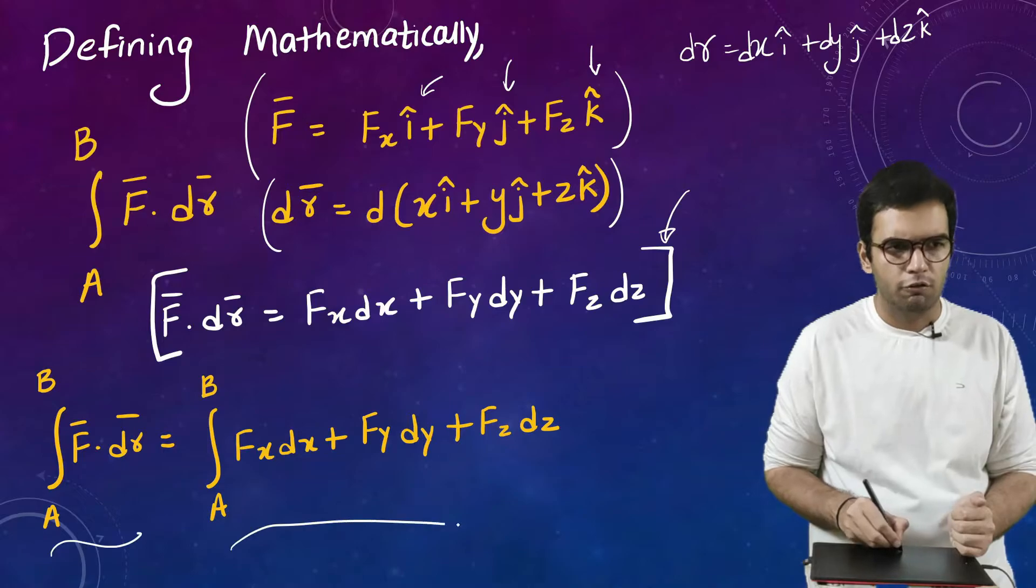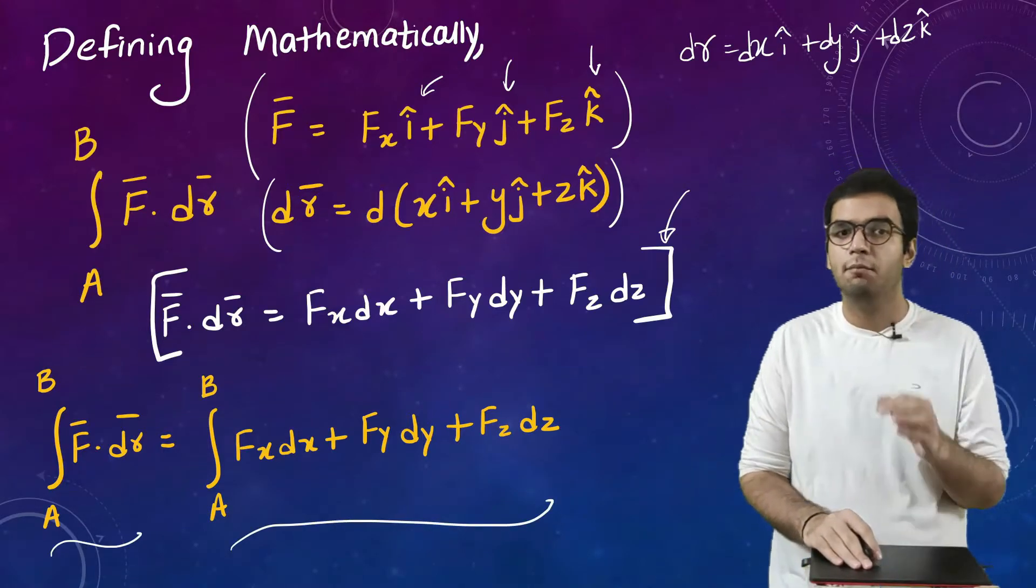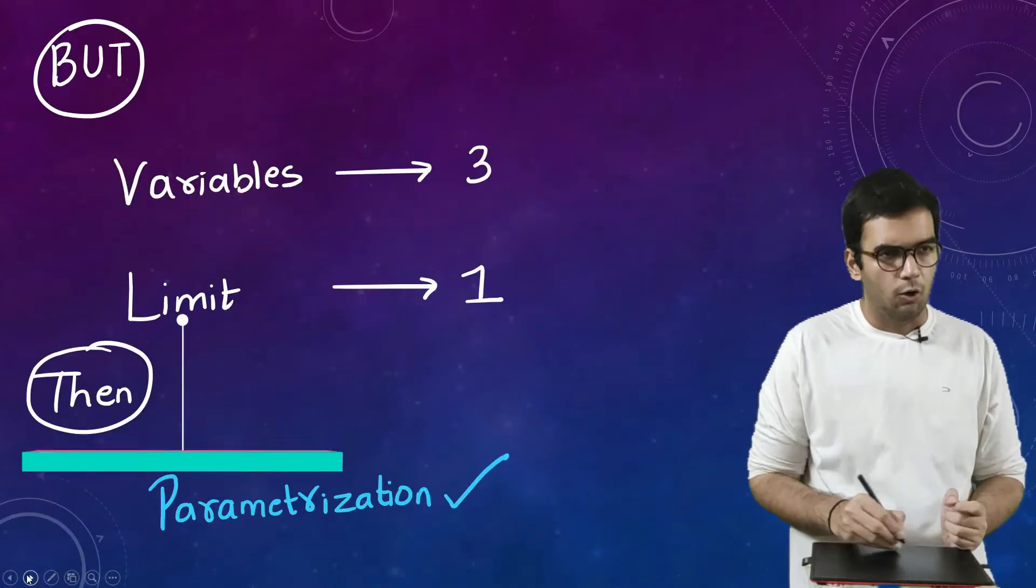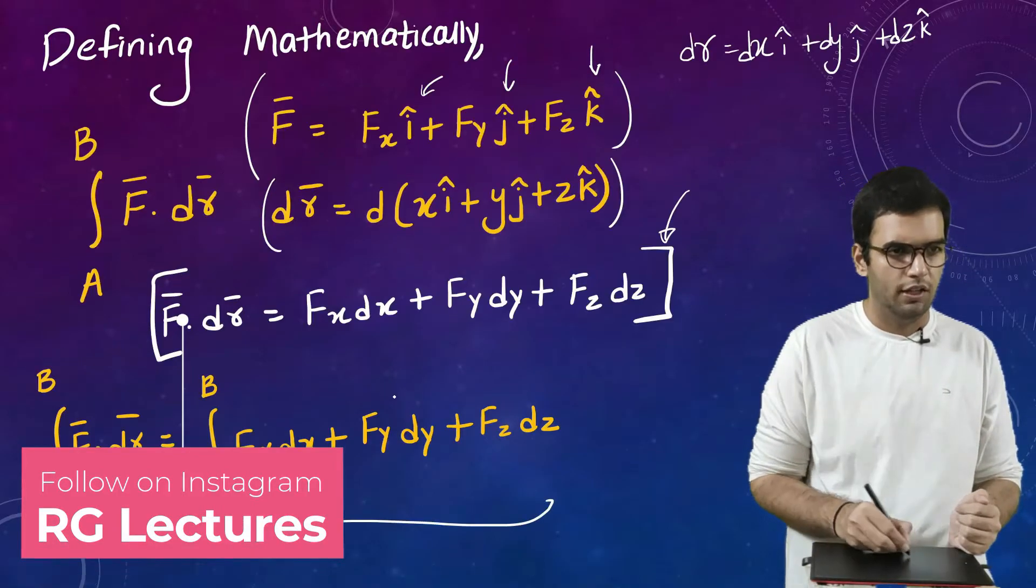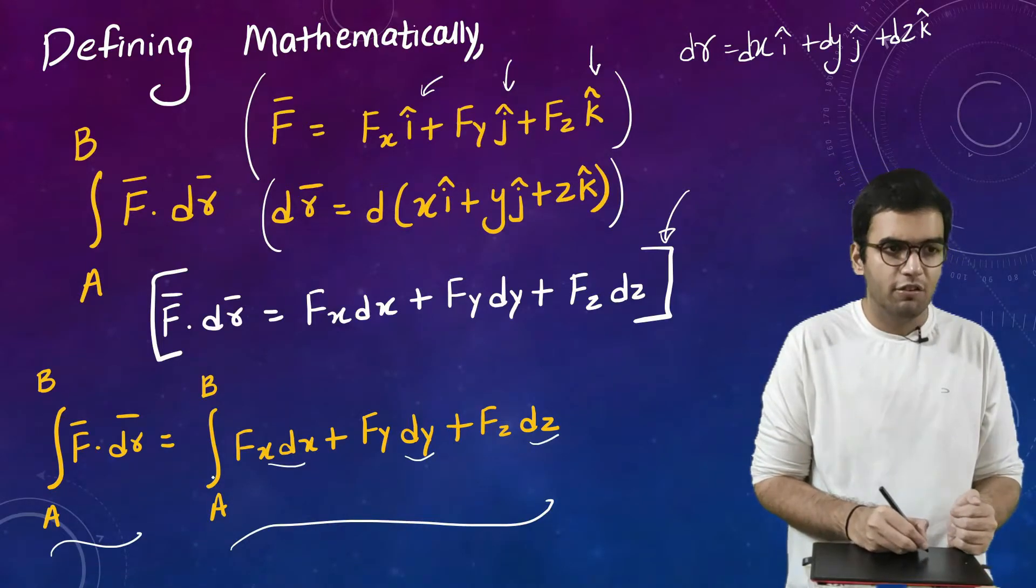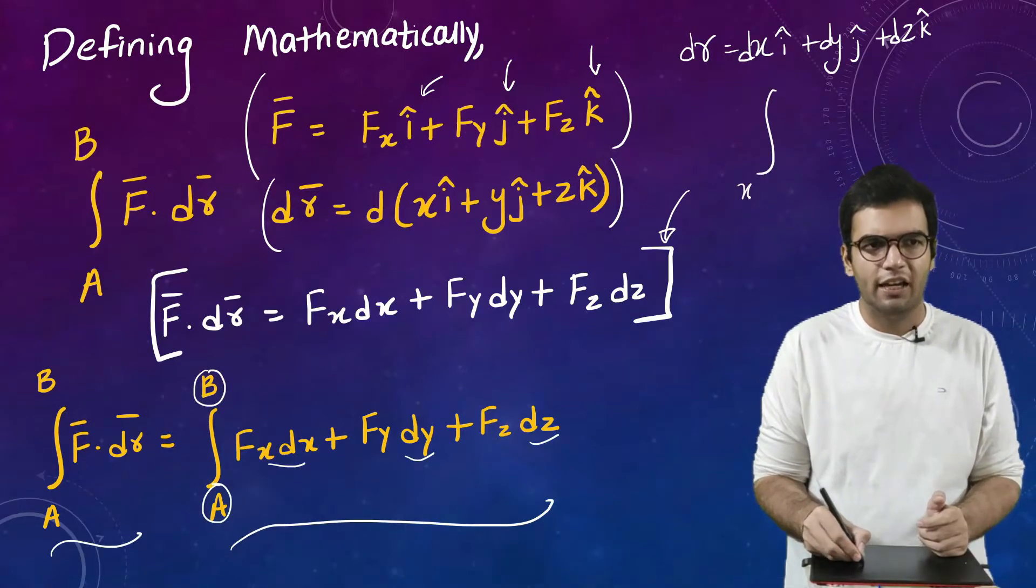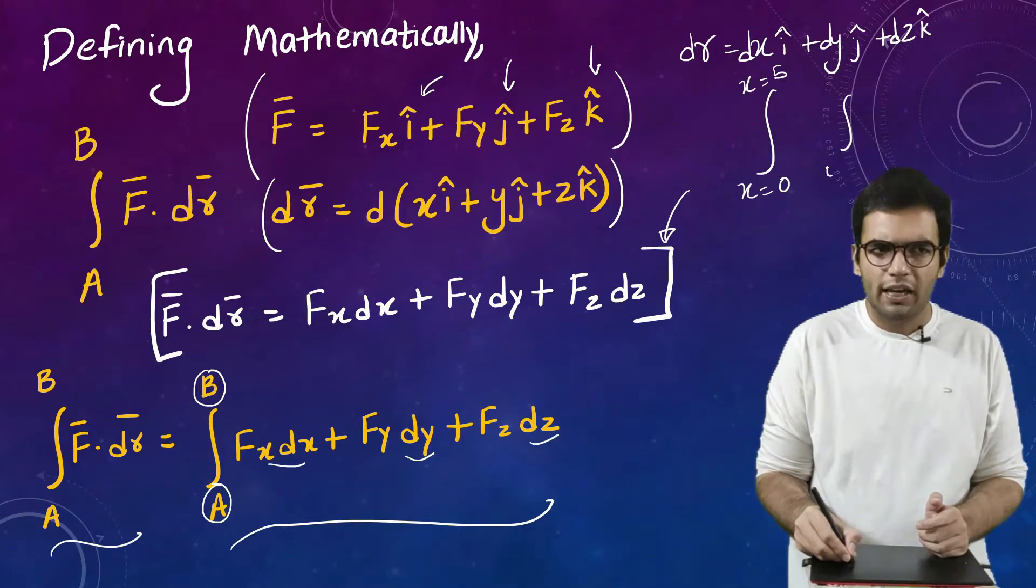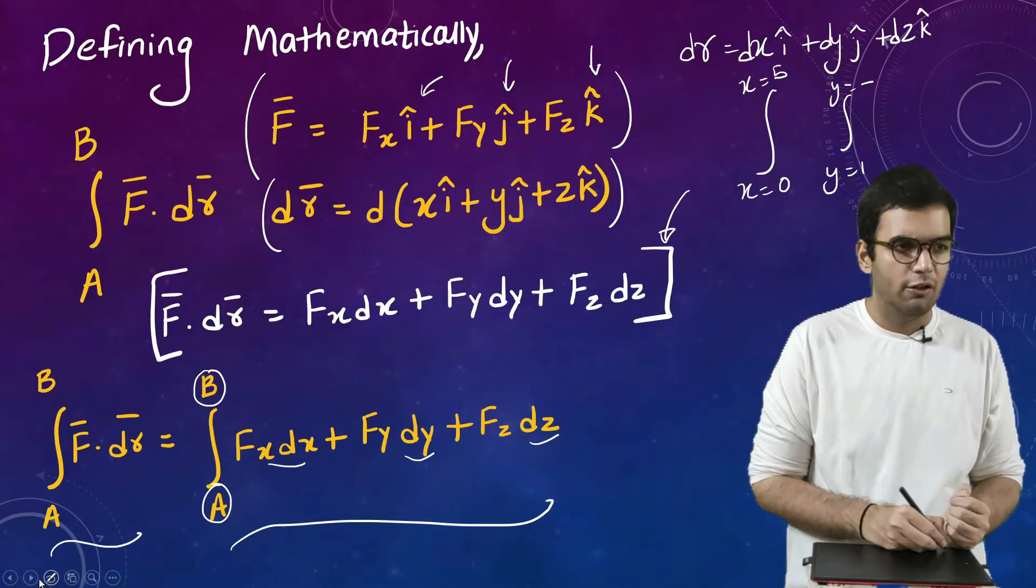So finally instead of this I can also write this as the answer. So this is the mathematical definition of the line integration. Okay, now the thing here is there are three variables in the equation: there is dx, there is dy, there is dz. But if I look at this integral I can substitute only one limit in this integral, right? I can write either x equals to 0 to x equals to 5 or I can write y equals to 1 to y equals to something or I can write about z, right? So this is the problem here but the solution to this problem is known as parametrization.